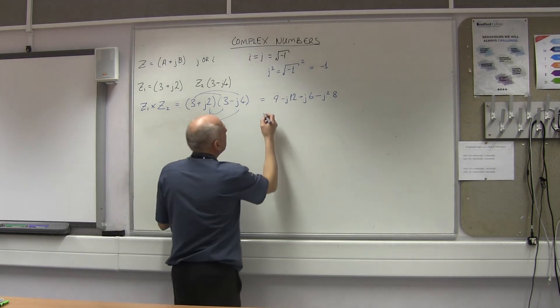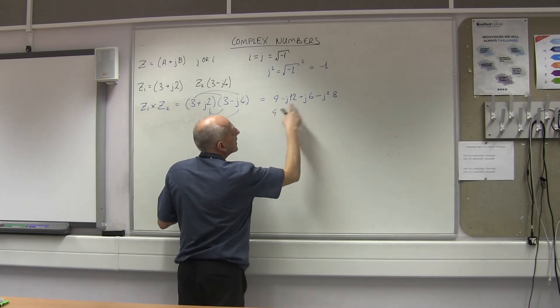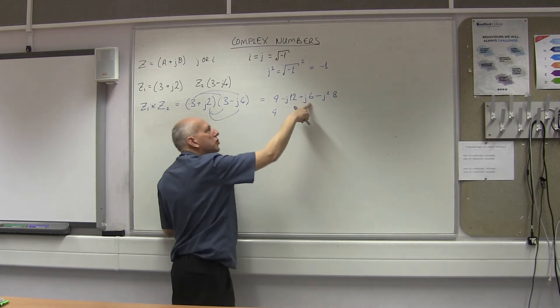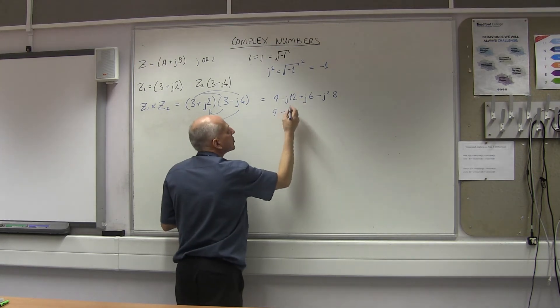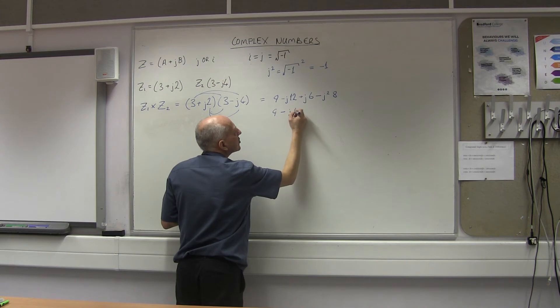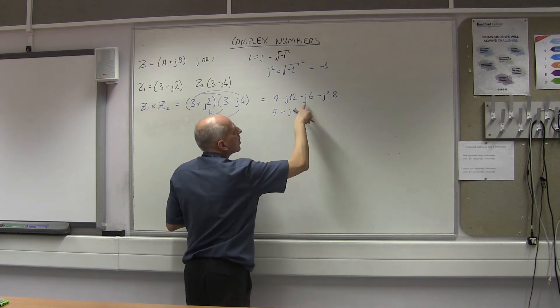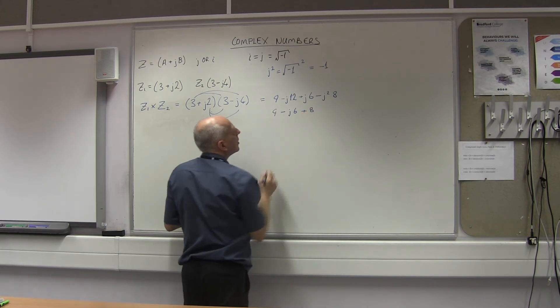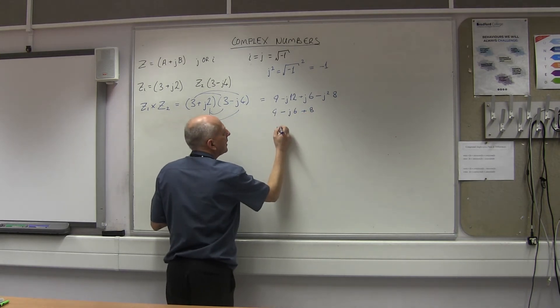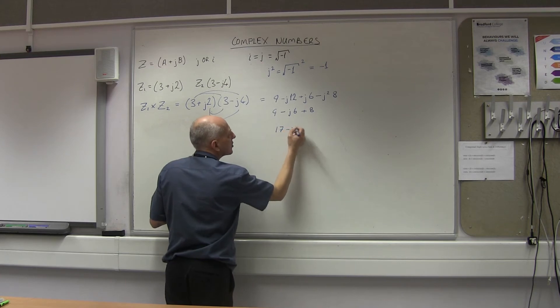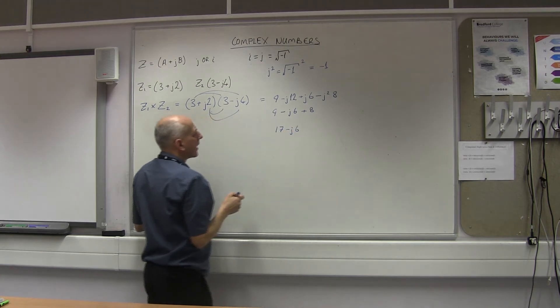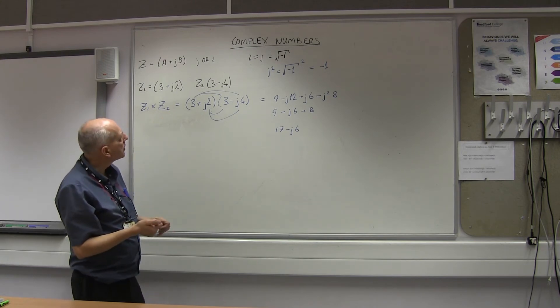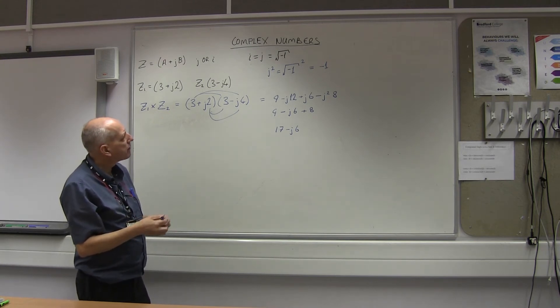So we've got now 9. If I add these two together they're like terms. Minus 12 plus 6, I'm going to end up with minus J6. And this has become plus 8. So I've now got 9 and 8 is 17 minus J6. And that's my final answer. That's the two of them multiplied together.